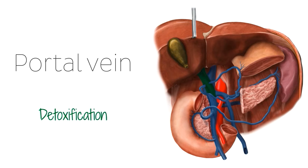Before we move on to talk about the different components of the portal vein, I want to have a brief chat about the portal vena system overall. As we mentioned, the portal vena system is a unique system that involves the movement of blood from the gastrointestinal tract to the liver. The process, which involves the liver as a processing station, looks a little bit like the cycle below.